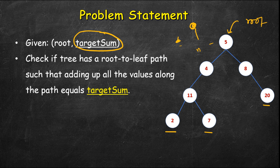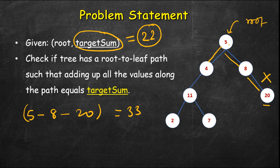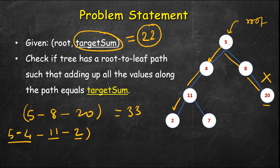Let's say we are given this binary tree and the target value is 22. If you go from 5 to 8 and then to 20, you've reached a leaf node — the sum is 33, so this path does not satisfy the condition. Now let's take another path: starting from root, we go 5, 4, then 11, and then 2.